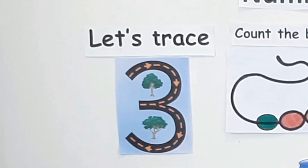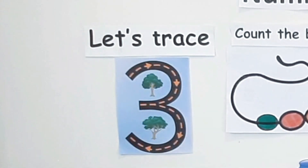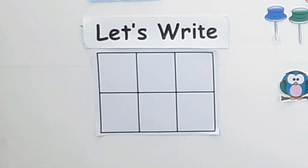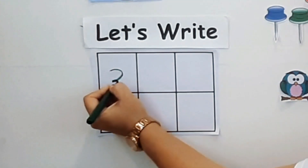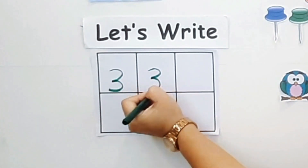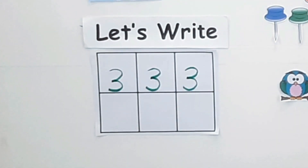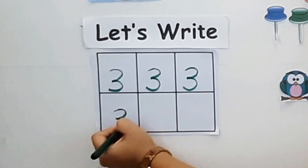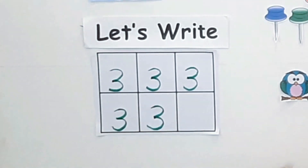Now it's time to write number 3. First we are going to trace number 3 — we make a curve line and then one more curve line. Half around and half around makes the figure of 3. Grab a piece of paper and a pencil, or a slate and chalk, and write along with me. Half around and half around — make the figure of 3!